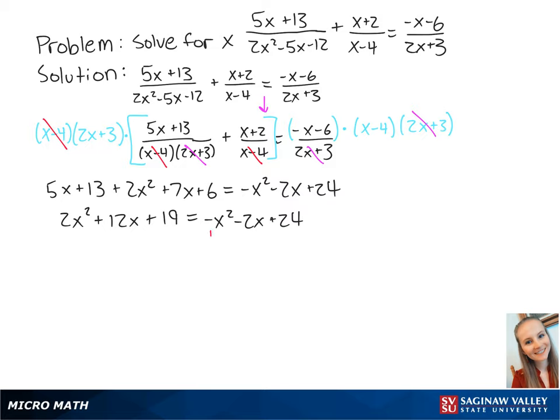To solve for x, we want the right side of the equation to be equal to 0. So we're going to subtract negative x squared minus 2x plus 24 from both sides, giving us 3x squared plus 14x minus 5 equals 0.